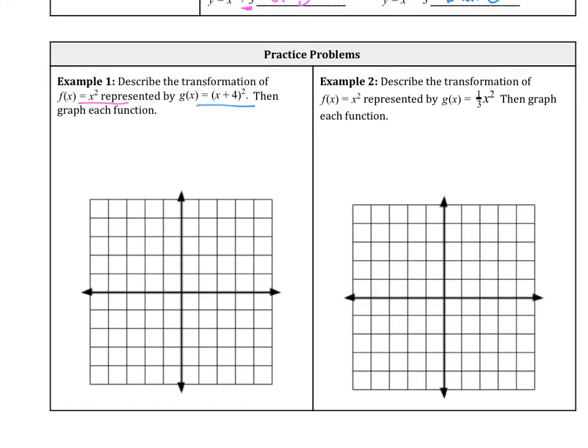So what is the transformation happening here? If we have a positive 4 on the inside, how is this translated? So this is translated left 4. So let's graph our parent first, x squared, so it starts at the origin, then right one, up one, right one, up three.